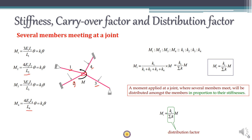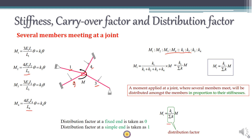When an external moment is applied at joint O, it is distributed among each of the members in the same ratio as their stiffness. This distribution proportion is called the distribution factor. The distribution factor for a particular member equals the stiffness of that member divided by the sum of stiffness of all members meeting at that joint. Notably, the distribution factor for a fixed end is zero, and for a simple (pinned) end it is taken as one.